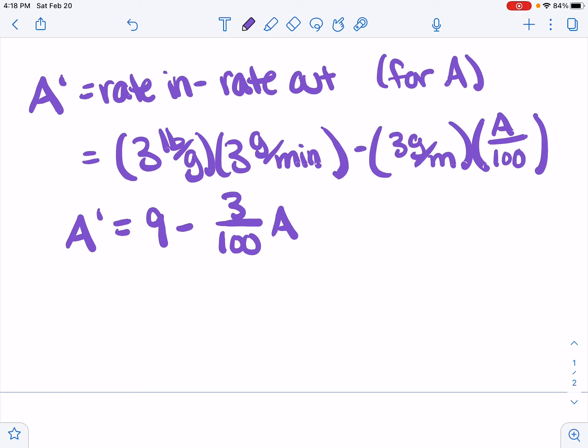But we have another variable now. So we have B prime, and the rate in for B, as it leaves A, it comes into B. So what is that? The rate in is the 3 gallons per minute in. What's that concentration? The concentration is the concentration of A. So A pounds over 100 gallons gives us the concentration of the brine coming in to tank B.